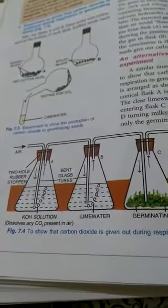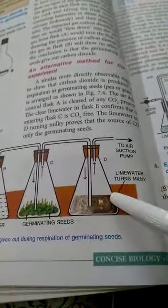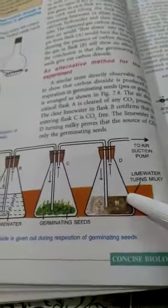Now you have to connect all these conical flasks through these tubes in this way. Now after few days you will observe that the color of lime water present in flask D changes to milky. What is the reason behind it?